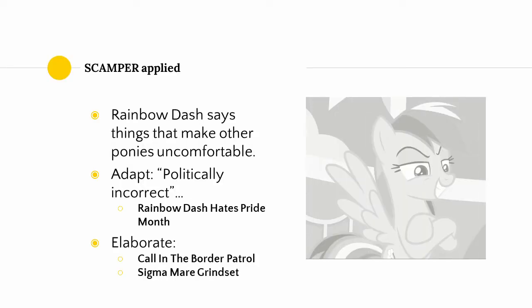If you're wondering where all those techniques went, here's something a little bit more sophisticated. I didn't explicitly intend to implement the SCAMPER technique, but this fits within that framework. We know from watching the show that Rainbow Dash is a pony who says things that make other ponies uncomfortable. So if we adapt elements from real world politics, maybe Rainbow Dash is the politically incorrect pony — like that one friend who pushes a little too far in conversations and might come off as culturally insensitive, but not in a malicious way. She just has strong feelings. Which first led to the creation of Rainbow Dash Hate Pride Month.